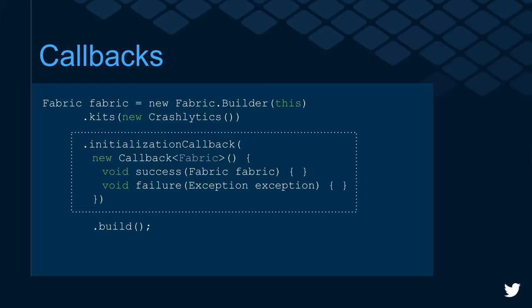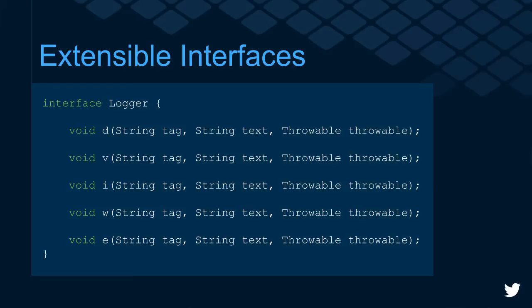Part of extensible code is allowing the developer to choose when to be notified when certain behavior happens. Here's an example of initializing Fabric with a Builder pattern — we can set an initialization callback that notifies the app developer once all the synchronous and asynchronous setup of Fabric is done, or when there are failure conditions. We also provide extensible interfaces for logging: some people use Timber, some use Logcat, some use Log4j Android. We provide a custom logging interface so developers can use their own preferred tools and we'll use that through the entire SDK platform.